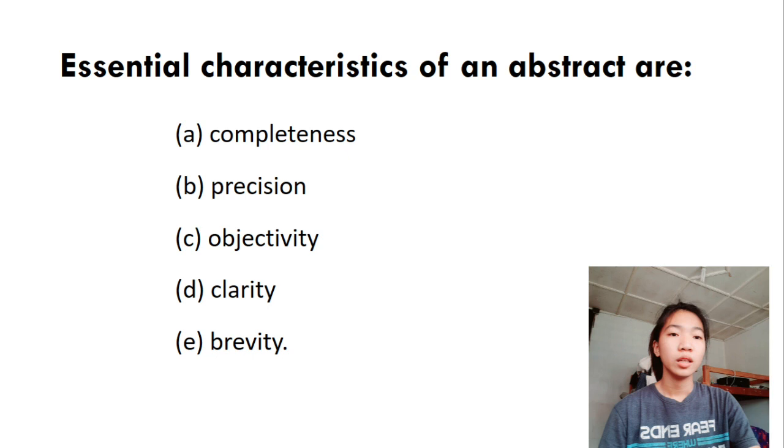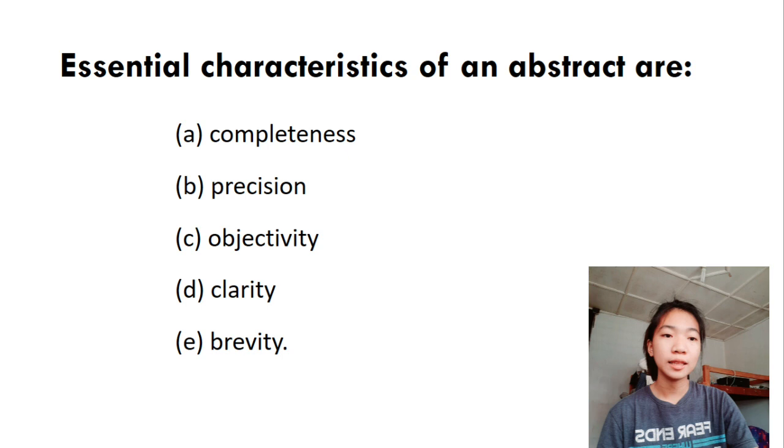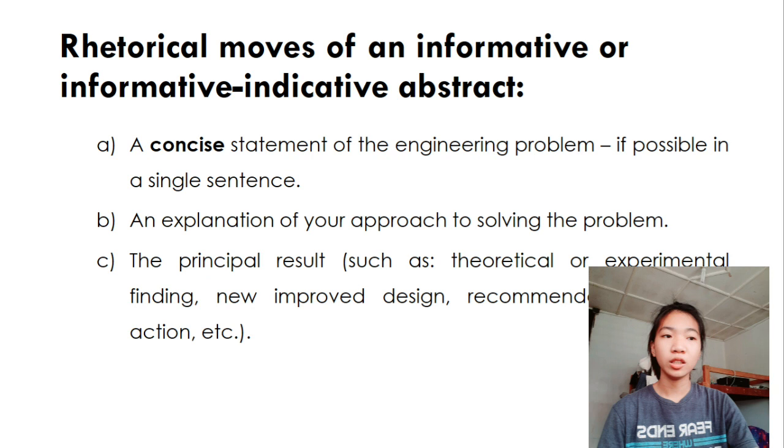Here are some essential characteristics of an abstract. It has the characteristic of completeness, precision, objectivity, clarity, and brevity. For rhetorical moves of an informative or informative indicative abstract, a concise statement of the engineering problem, if possible, in a single sentence. Or an explanation of your approach to solving the problem. Third, the principal result, such as theoretical or experimental finding, the improved design, recommended course of action, etc.